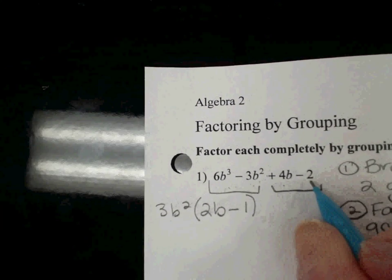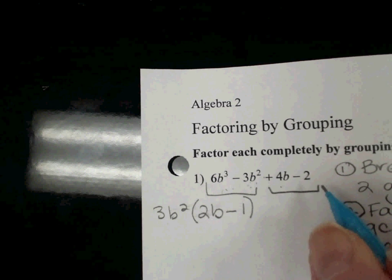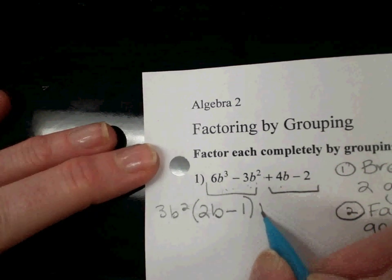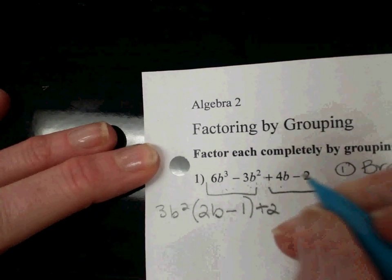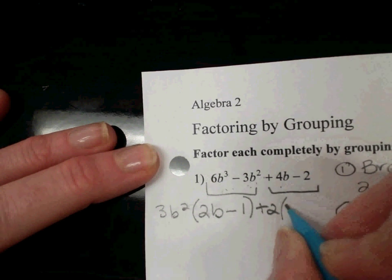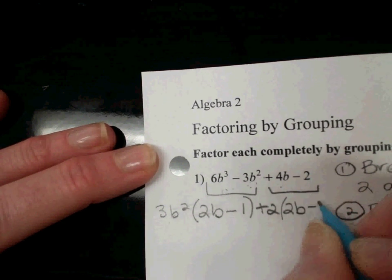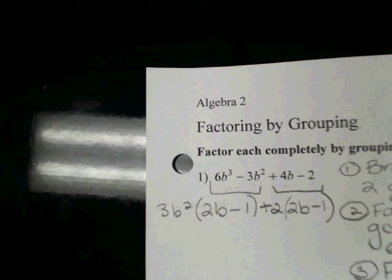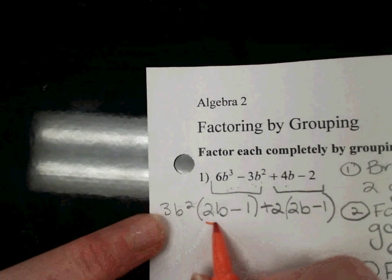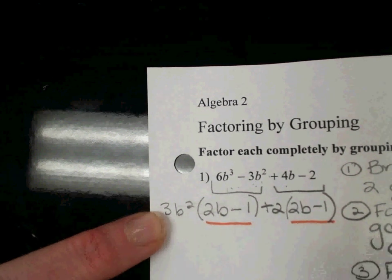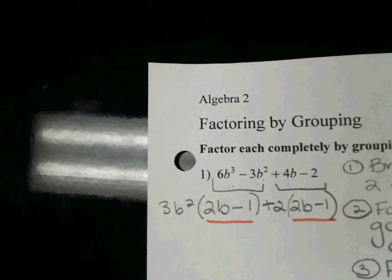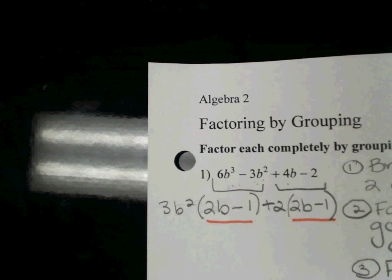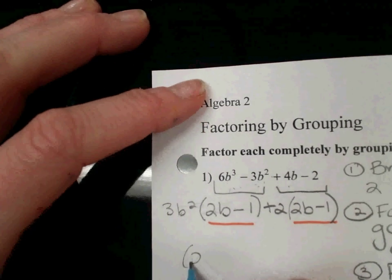And then looking at 4b and minus 2, the GCF is 2. So I do plus 2, and I'm left with 2b minus 1. And this crazy thing happens. I have a 2b minus 1 in each part. So when number three comes in, factor again, you're going to factor out that common group. So put that in front, 2b minus 1.